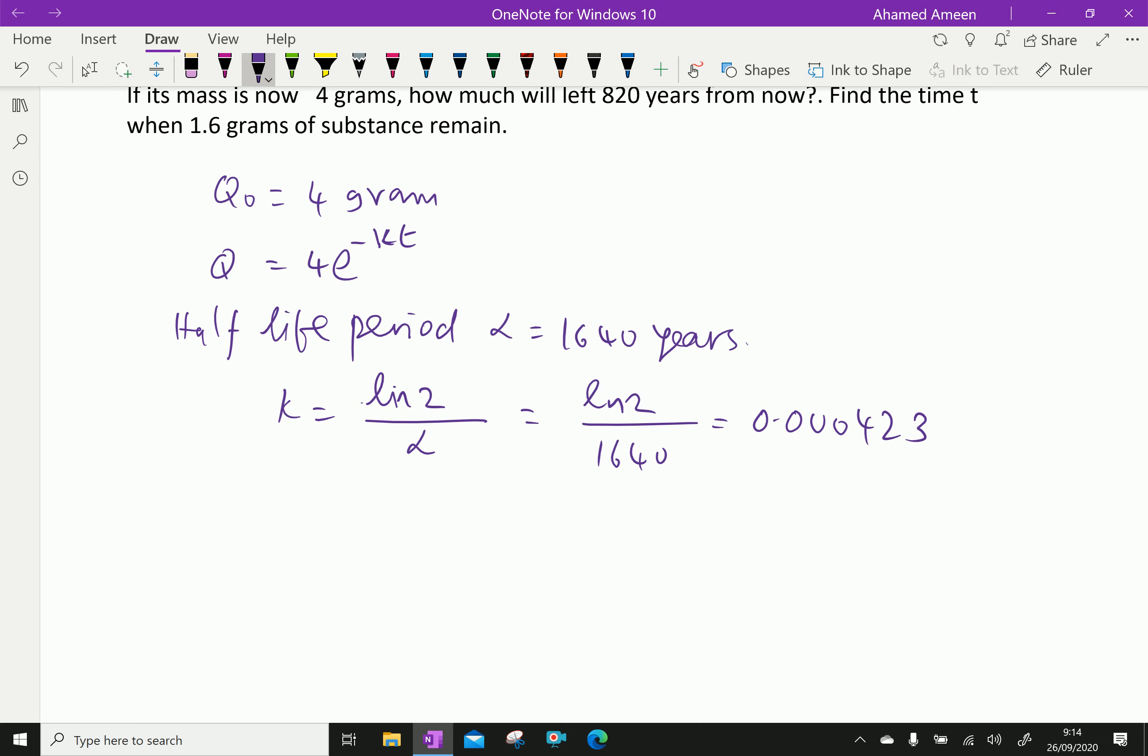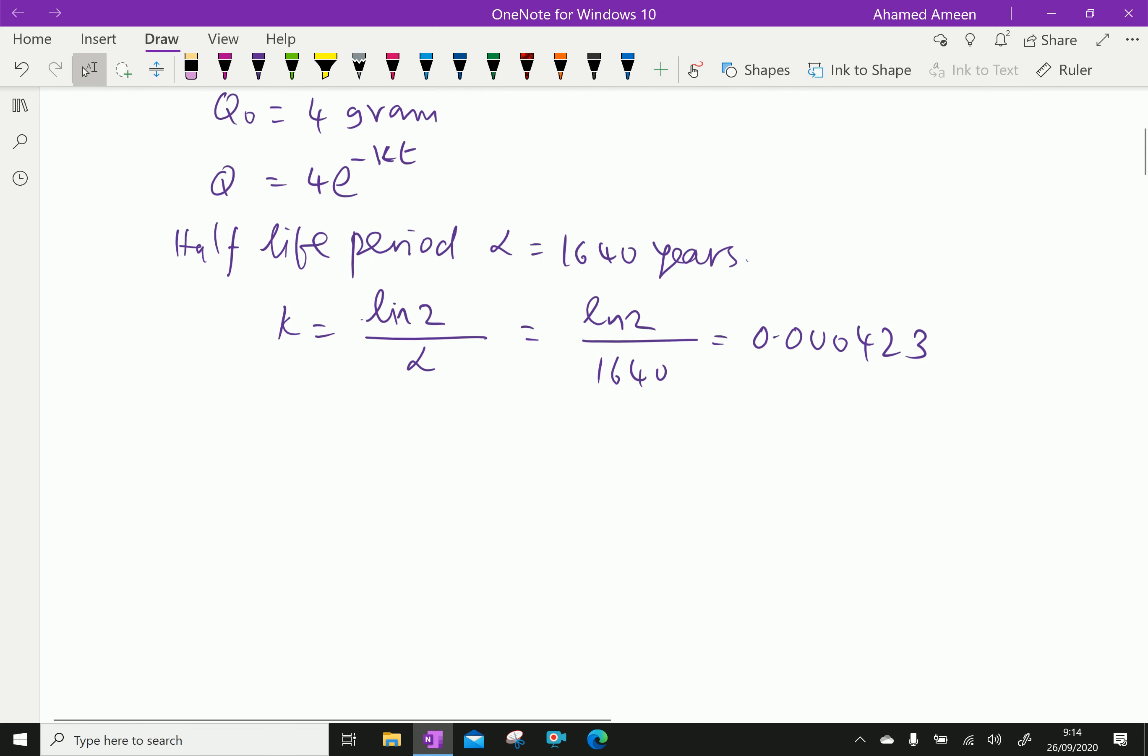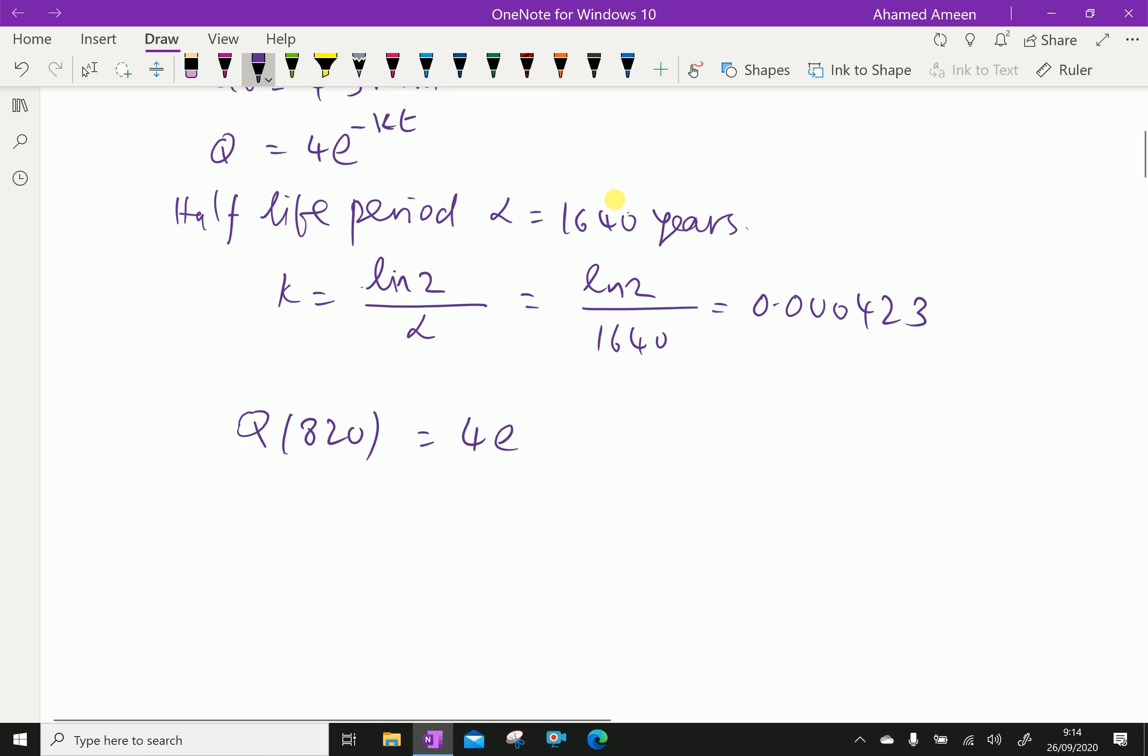Now, first we have to find how much is left after 820 years. Q of 820 equals 4 times e to the power minus 820 times 0.000423.